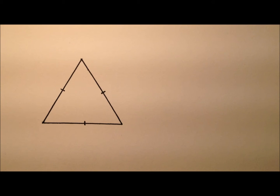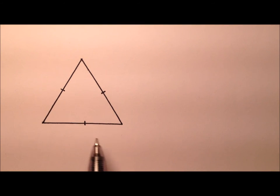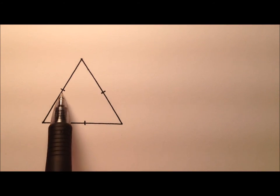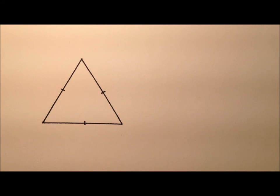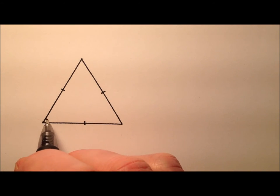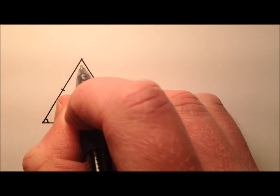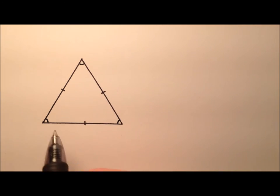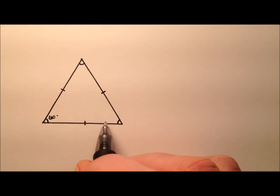We're going to do this geometrically, and I'm going to start with an equilateral triangle. All three sides are the same, which means all of these angles are also the same — they're all going to be 60 degrees.